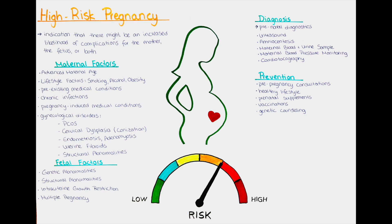Is there any way of preventing a high-risk pregnancy? Many factors that contribute to the development of a high-risk pregnancy cannot be influenced, but there are some ways to reduce the risk for a woman who wishes to have a child. Before planning a pregnancy, it is advised to consult with a gynecologist and/or a general practitioner to address and manage chronic medical conditions such as diabetes or hypertension.